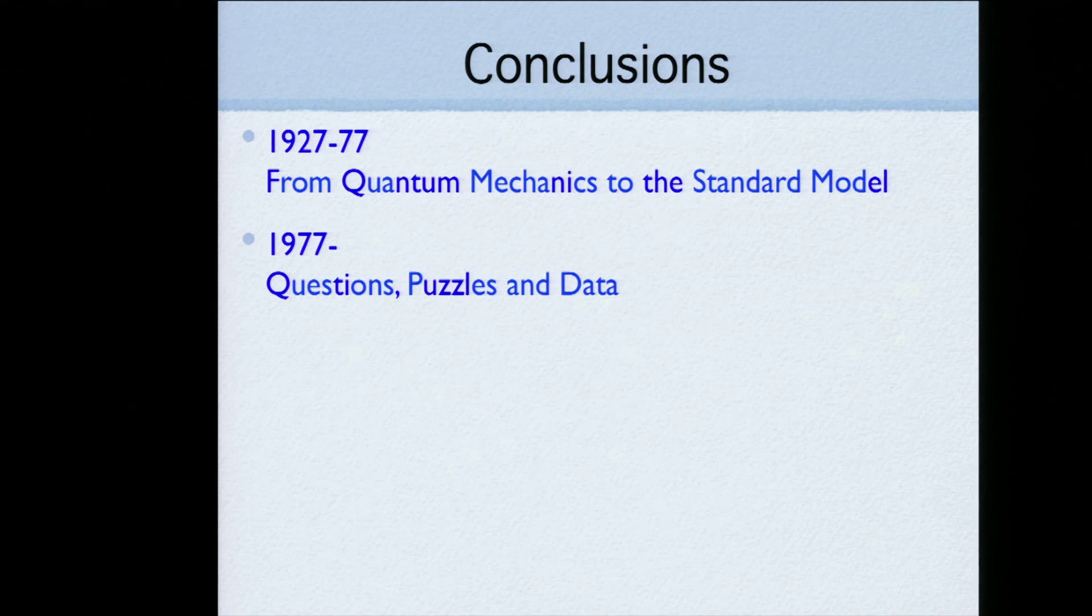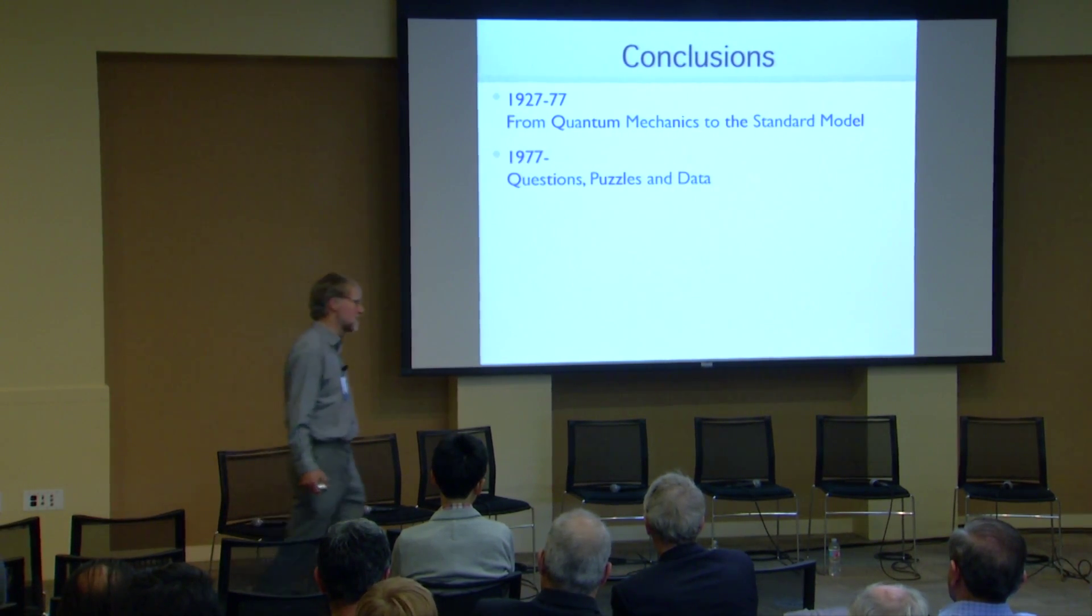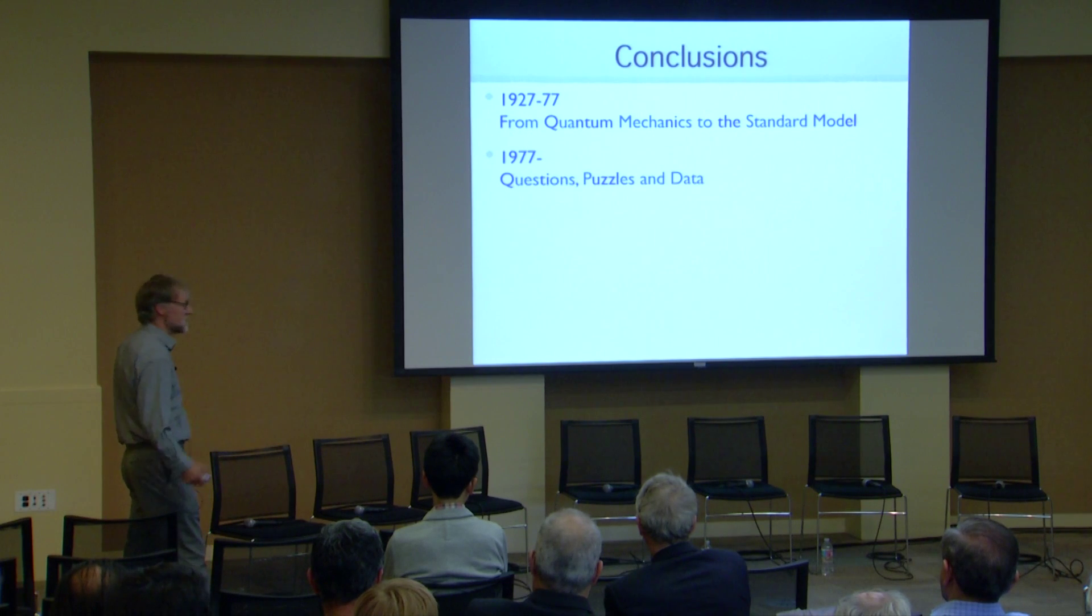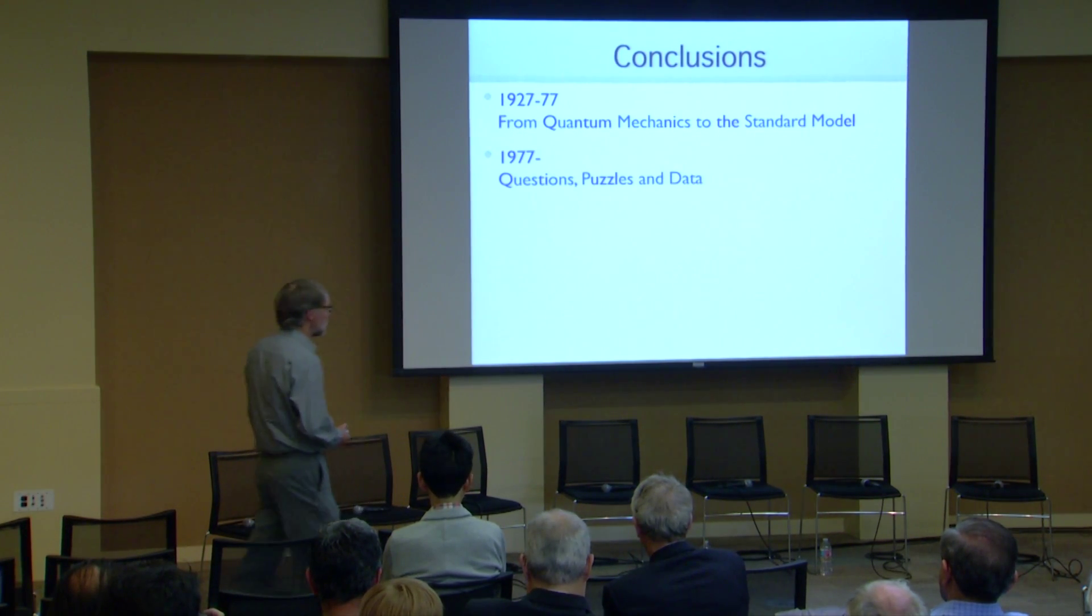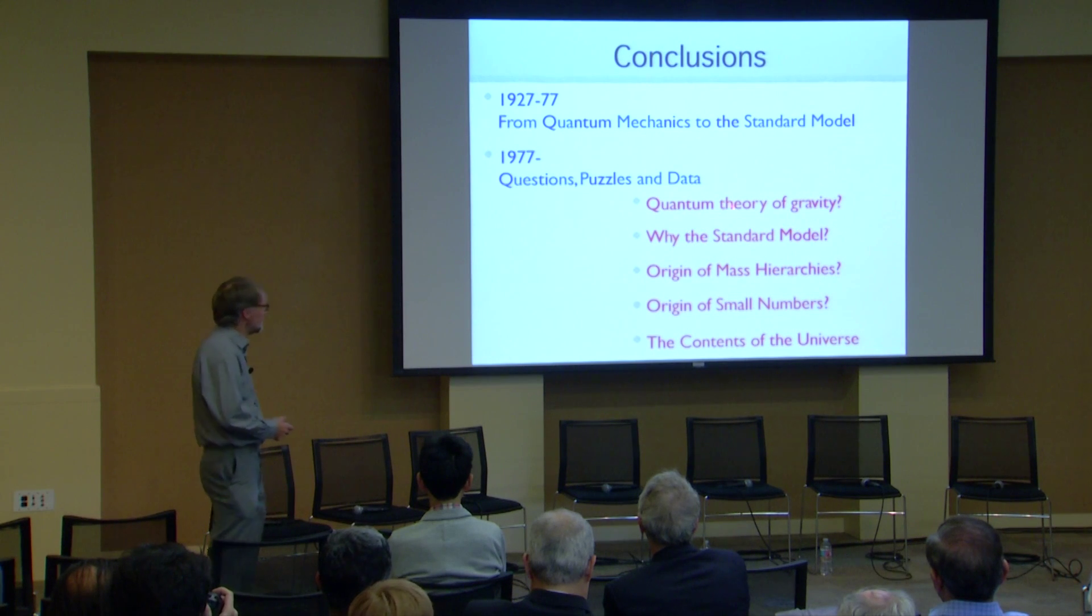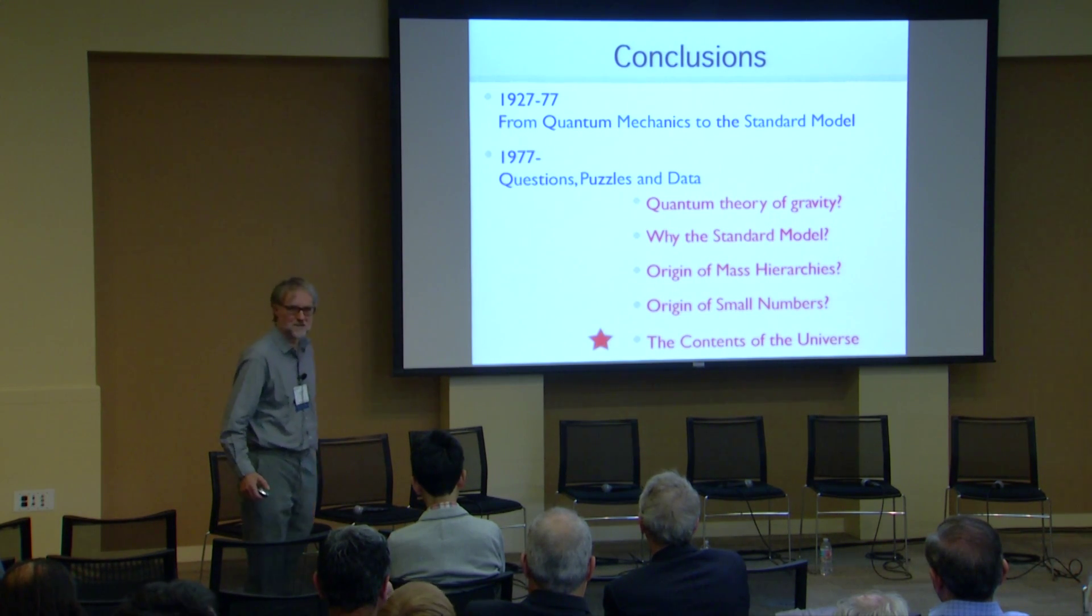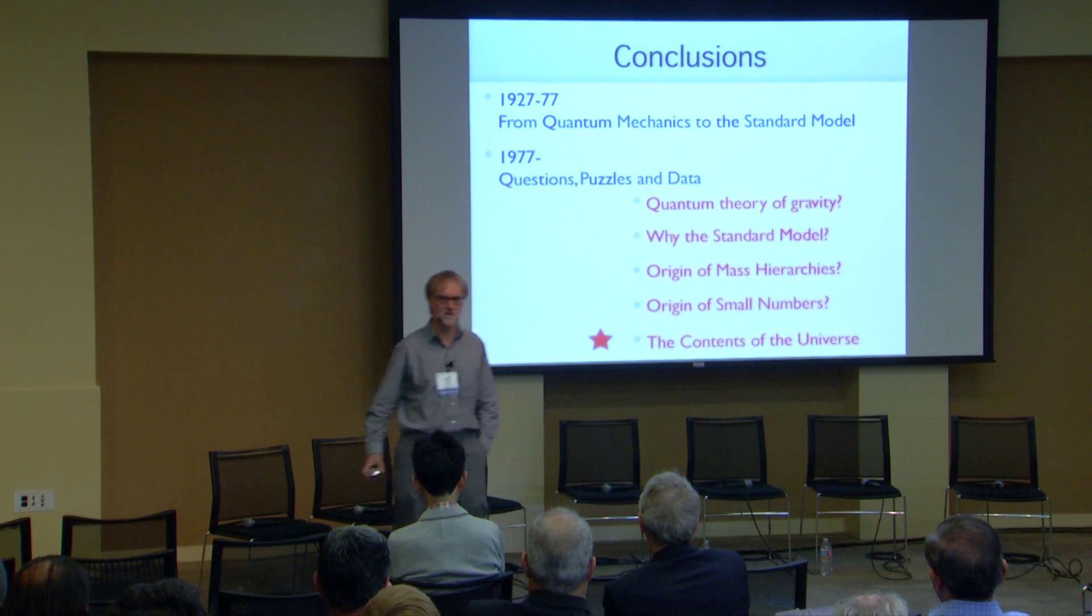So I started off talking about the half century from quantum mechanics to the standard model, and what a great half century it was. We're now into the next cycle, the beyond the standard model cycle. We're about 40 years into it. I think that we're still at the level of framing the questions, thinking about the puzzles, and looking for new data that is going to guide us. That's not to say that we haven't made progress in theory. Of course we've made progress in theory. We've got many ideas over these decades that are really a tremendous progress. But we don't know how it all fits together. We don't know which theory is right. We may not even have anywhere near the right theory. So, the questions. Here's some of the questions. Quantum theory of gravity. Why is the standard model what it is? What's the origin of mass hierarchies? What's the origin of the small numbers? Well, I've placed my bets on the contents of the universe. I think the next breakthrough is going to be, we're going to be able to figure out what the contents of the universe is. Thanks very much.